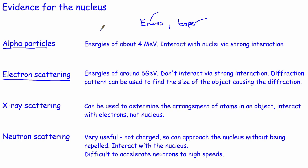Alpha particles in terms of energy are pretty good because the energy is fairly small. However, if they get close to the nucleus, they interact via the strong interaction, which will change the results. Electron scattering is done through electron diffraction and requires much higher energies of about 6 GeV, so there's a chance they could start to smash nuclei apart. The advantage of electrons is that they're leptons, so they don't interact via the strong interaction.